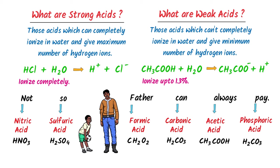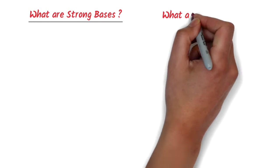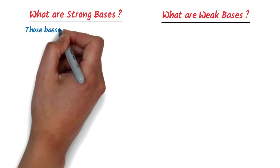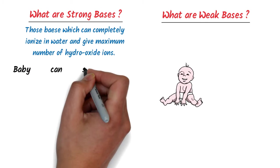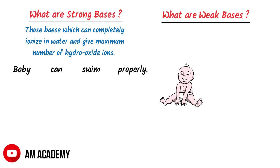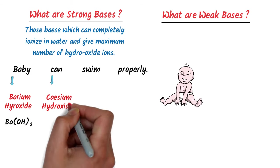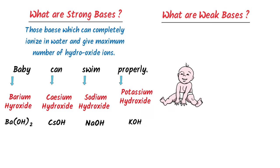We have already learned about the concept of strong and weak species, so now we can easily learn strong bases and weak bases. Strong bases are those which can completely ionize in water and give the maximum number of hydroxide ions. The trick to remember strong bases is 'baby can swim properly': B stands for barium hydroxide, C stands for caesium hydroxide, S stands for sodium hydroxide, P stands for potassium hydroxide.